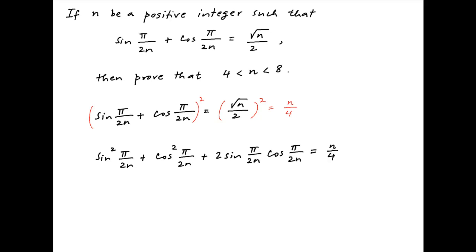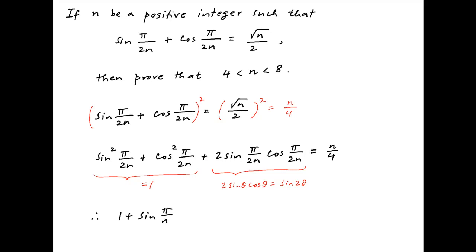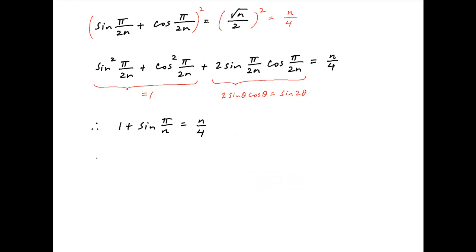Now sin²(π/2n) + cos²(π/2n) is equal to 1, and 2·sin(π/2n)·cos(π/2n) is equal to sin(π/n). Therefore the equation simplifies to 1 + sin(π/n) = n/4, which implies sin(π/n) = n/4 − 1 = (n − 4)/4.